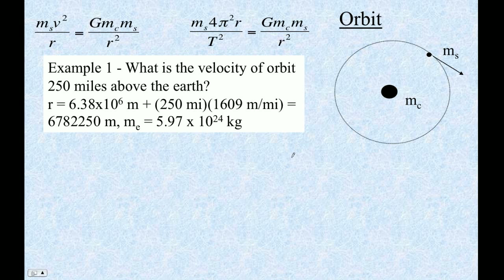Let me show you how to solve orbit problems. Concept zero for an orbit problem is that you've got this satellite, and the satellite is moving either with some velocity or some period around a central body. So that's what mc is, the central body.